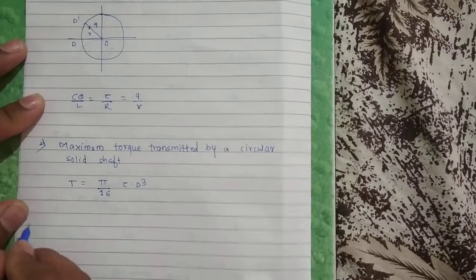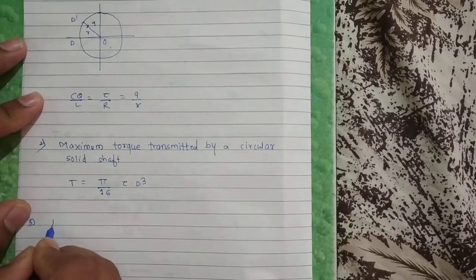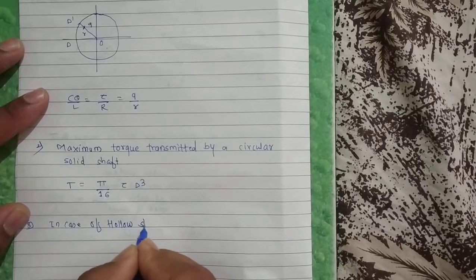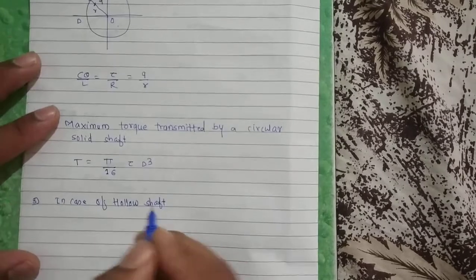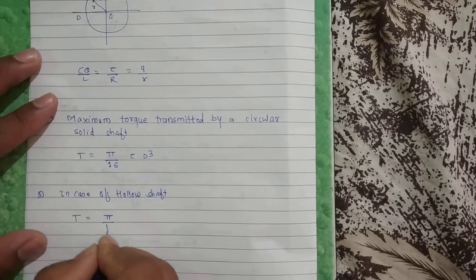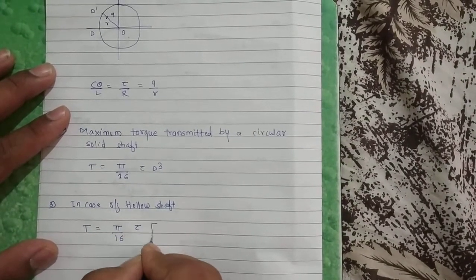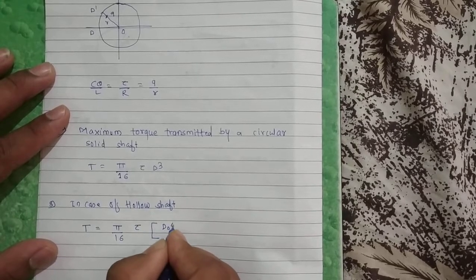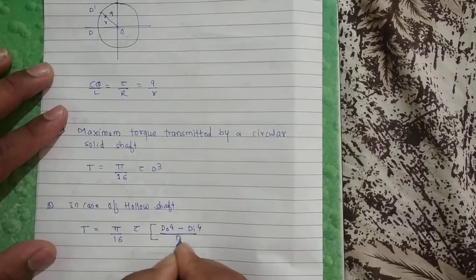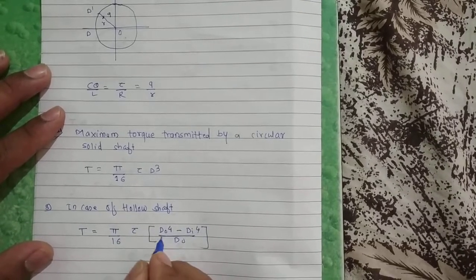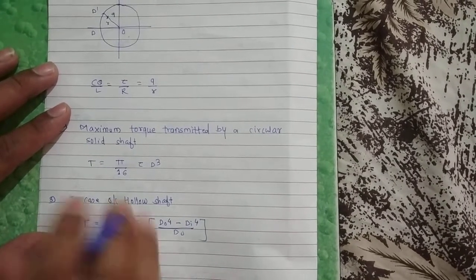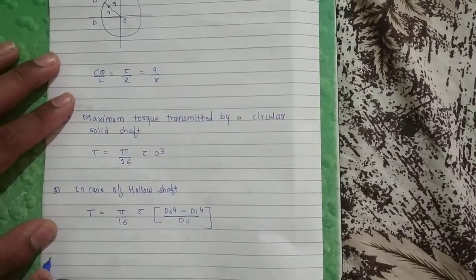Similarly, in the case of a hollow shaft, the maximum torque T is equal to (π/16) × tau × (D_outer⁴ − D_inner⁴) / D_outer, where D_outer is the outer diameter and D_inner is the inner diameter. This is the formula for the hollow shaft.